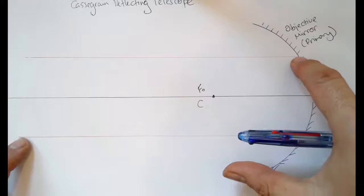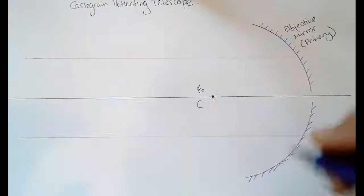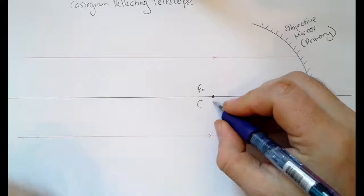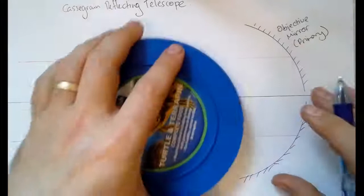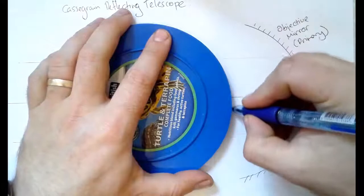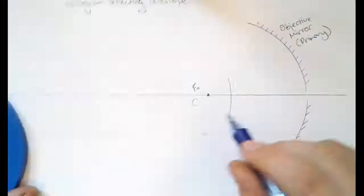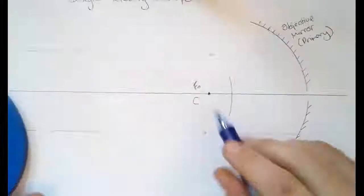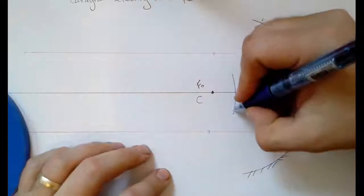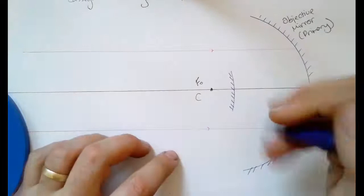So the rays of light will strike our mirror here, they'll get reflected towards this point and if nothing else were to happen then it would create a real image here of our object at infinity. However, there's something else that happens before it strikes that. It's designed with a secondary mirror in between this point and our primary mirror. Now this is convex, let's label that up, so convex secondary mirror.